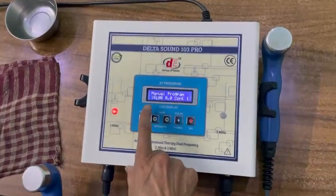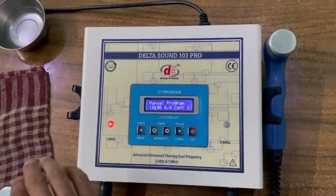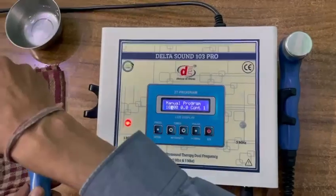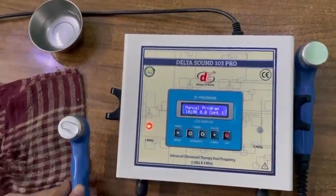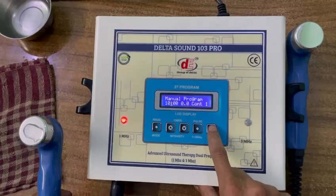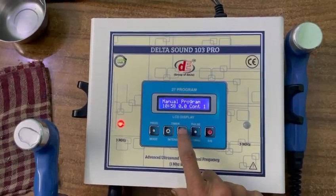It is now, cursor is blinking on timer button. Simply put on some bottles of mono-ultrasound for testing purpose. And simply press start button and increase the intensity.